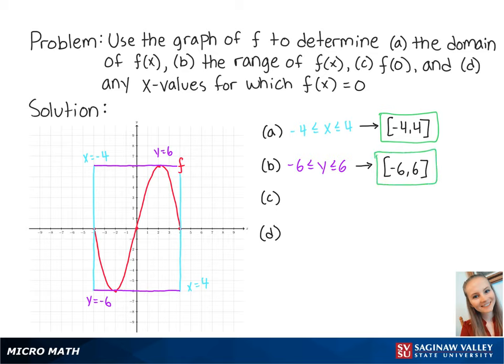For letter c, f of 0 is the value of the function when x is equal to 0. Looking at the graph, we can see that the value of y is 0 when x is 0. This means that f of 0 is equal to 0.